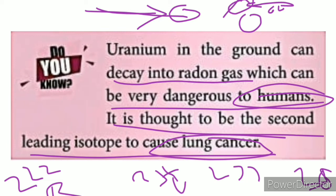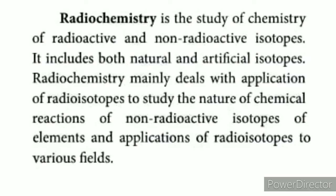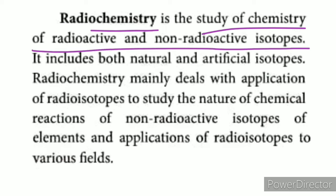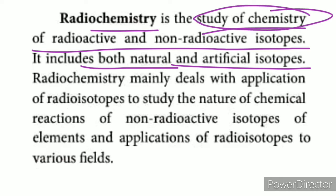Now, coming to the isotope topic: a radioactive isotope has the property of radioactivity. The topic of radiochemistry is the study of the chemistry of radioactive and non-radioactive isotopes — such as hydrogen, chlorine, or carbon. Carbon has both radioactive and non-radioactive isotopes. These include both natural and artificial isotopes.